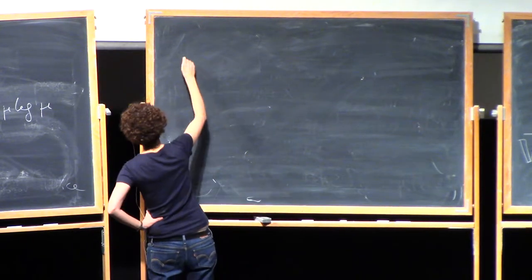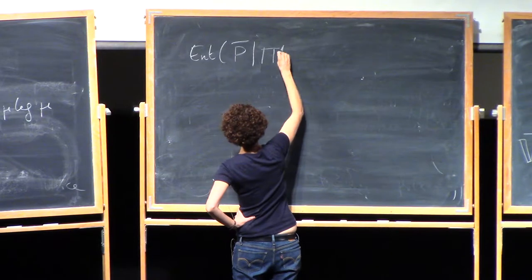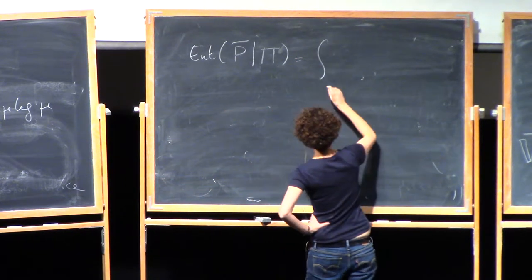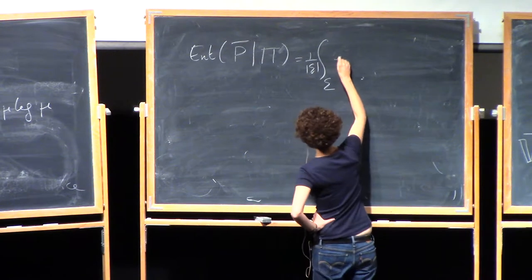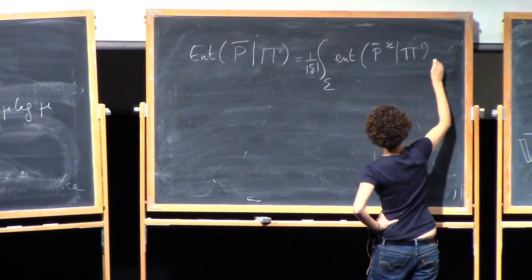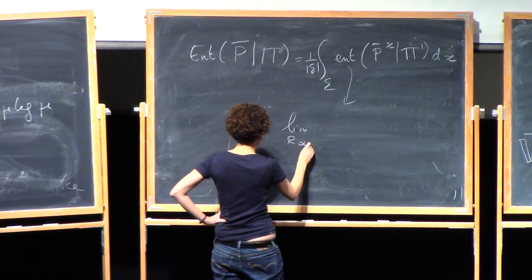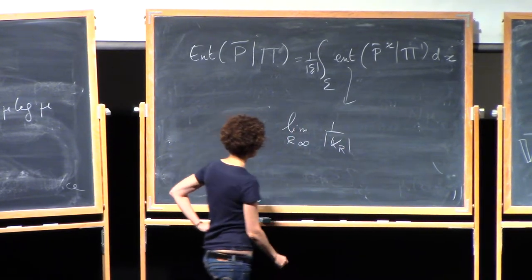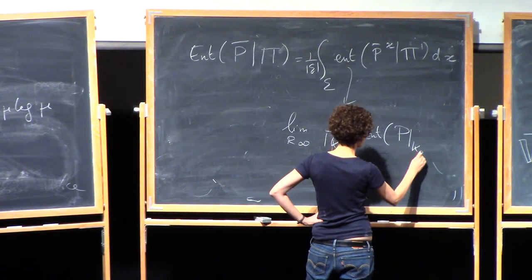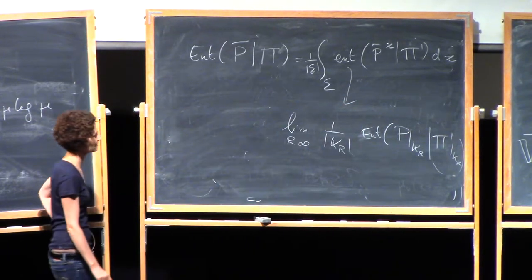I'm going to define the specific relative entropy of my empirical field with respect to the Poisson point process — P is there for Poisson. It's going to be an average over sigma of the specific relative entropy of P_bar_X, just an average with respect to Poisson. This one is defined by taking large box limits: you take a cube of size R and compute the usual entropy of your point process restricted to the cube relative to the Poisson point process restricted to the cube. So we have an entropy functional.